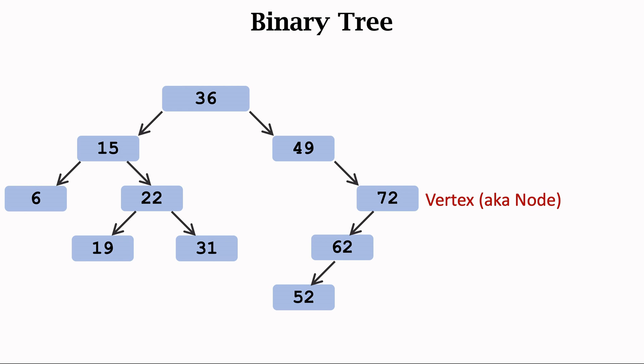Vertex is also known as node. Vertex and node are synonyms. The lines with arrows are edges. An edge is a pointer to another vertex.